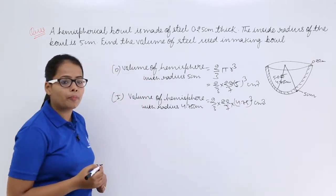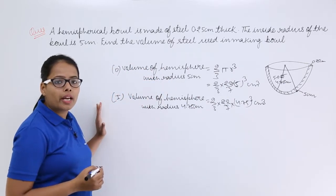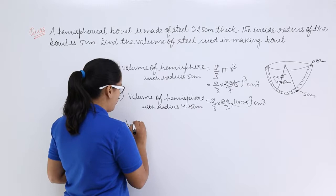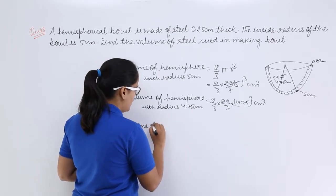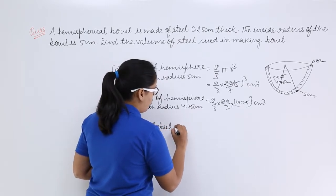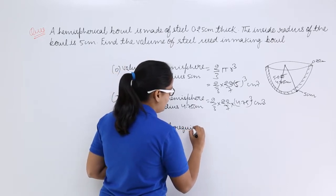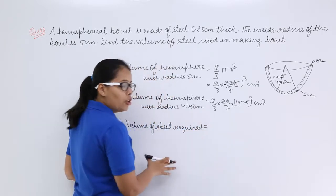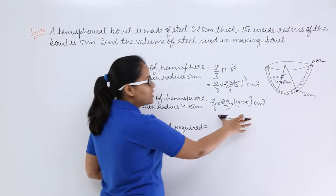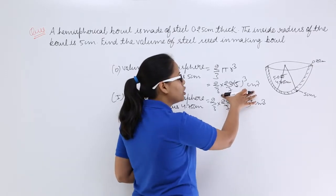Now we need to calculate the volume of steel required. What we do is subtract this volume from that volume.